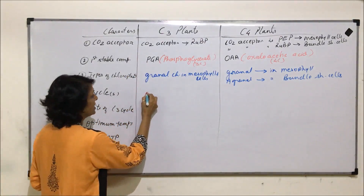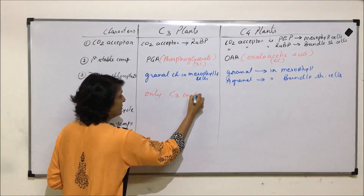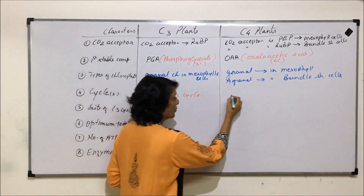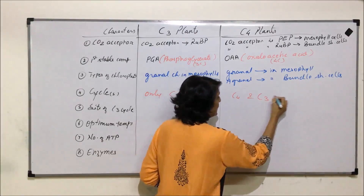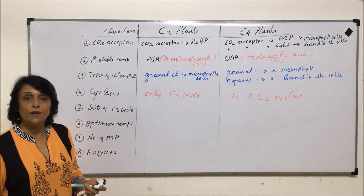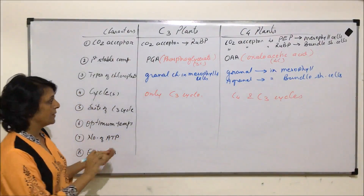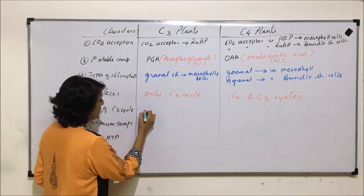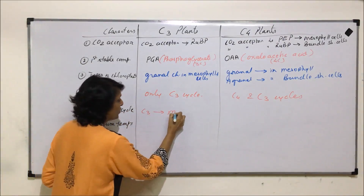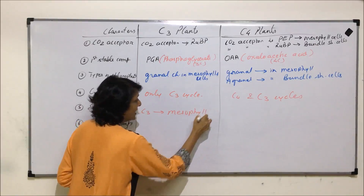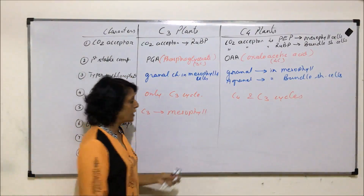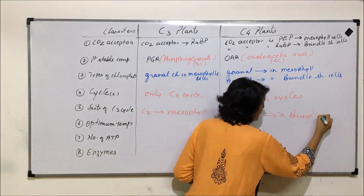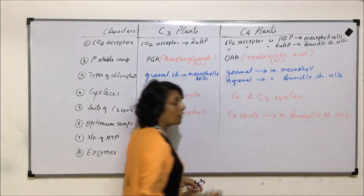The next point is which cycles are seen in these plants. In C3 plants, only the C3 cycle occurs, which we commonly know as the dark reaction. In C4 plants, both C4 and C3 cycles take place — C4 in mesophyll cells and C3 in bundle sheath cells. The C3 cycle takes place in mesophyll cells in C3 plants, but in bundle sheath cells in C4 plants.